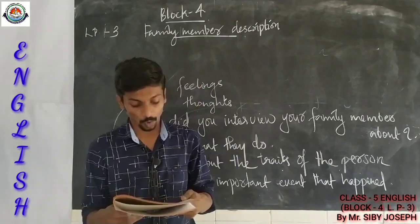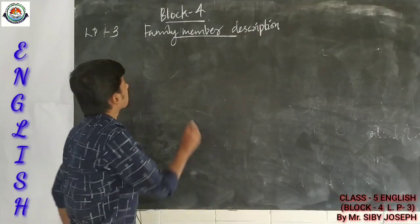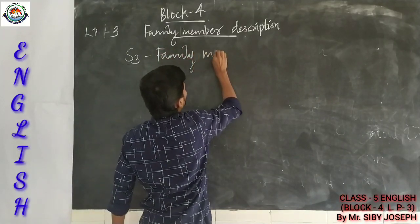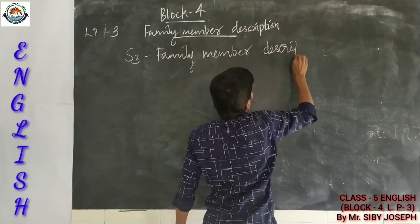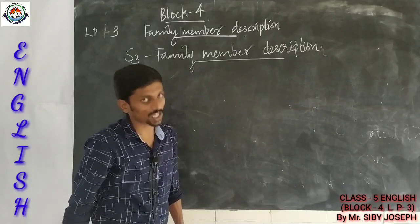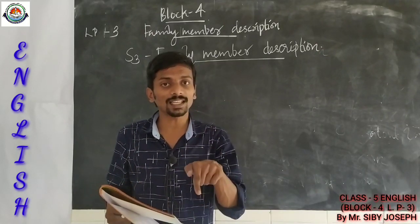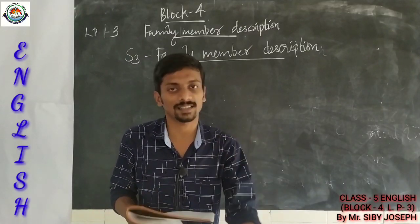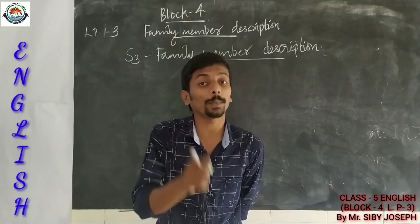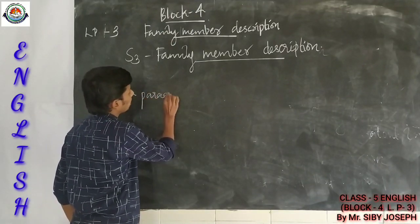Now please take page number 28 in your workbook and take S3 Family Member Description. There you have to write a journal entry about your family member using the questions you prepared and asked. A journal entry should be written in four paragraphs.